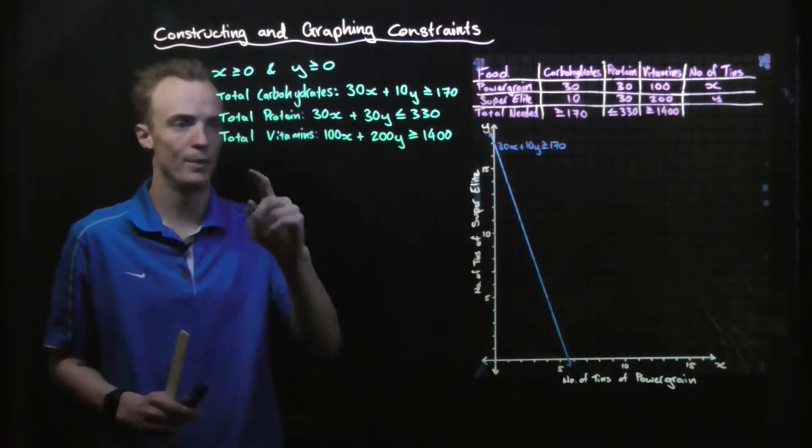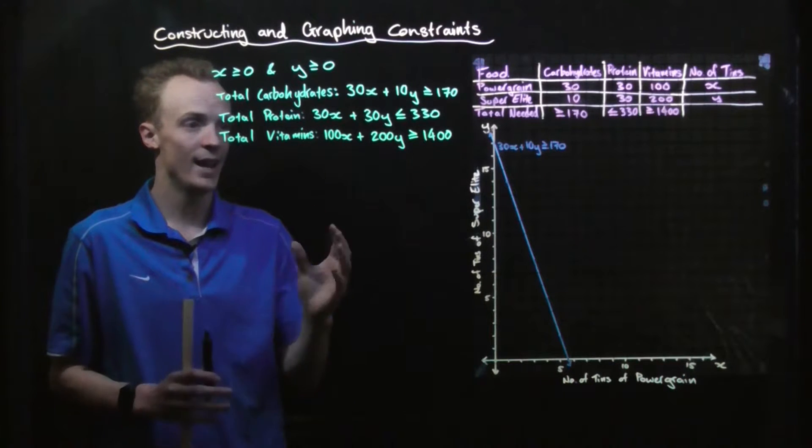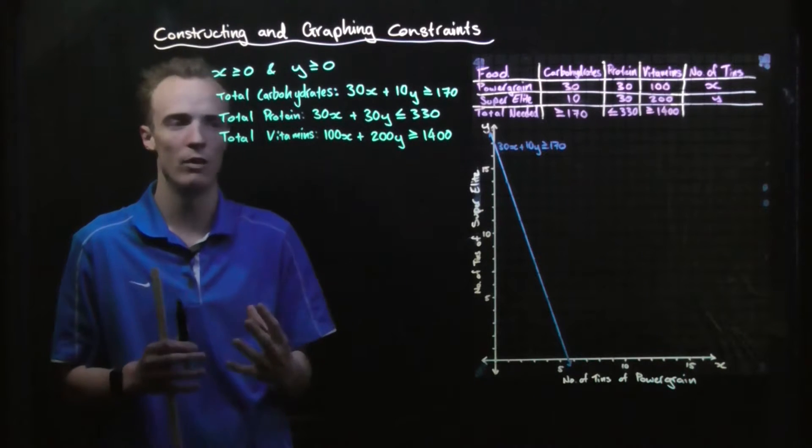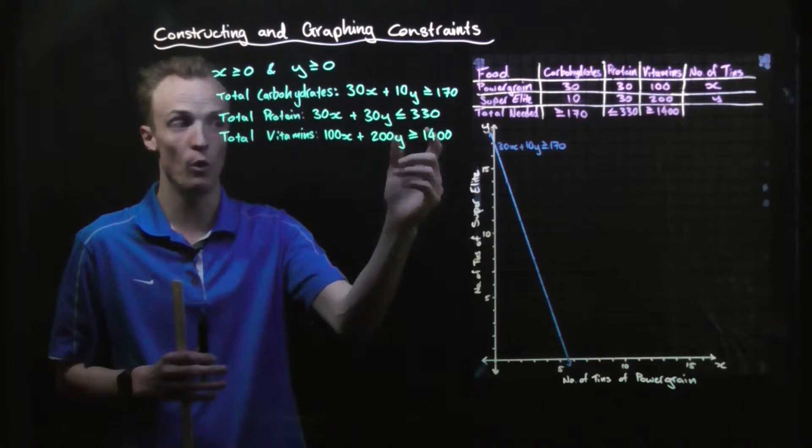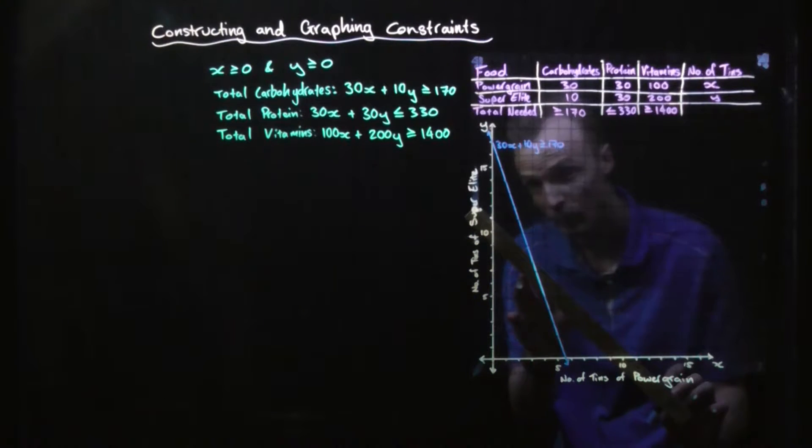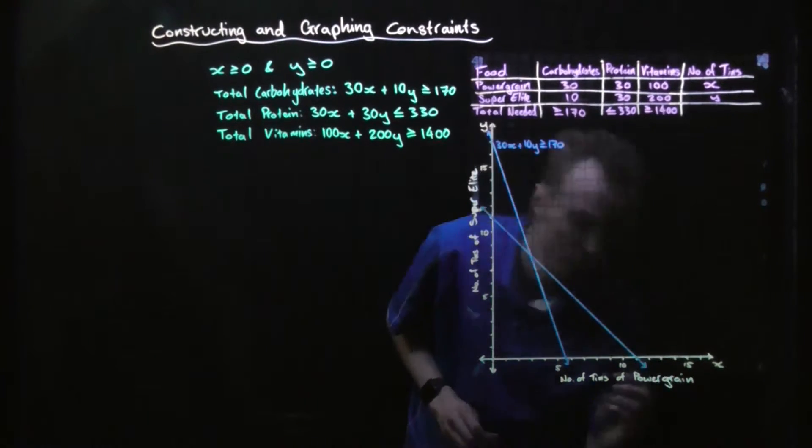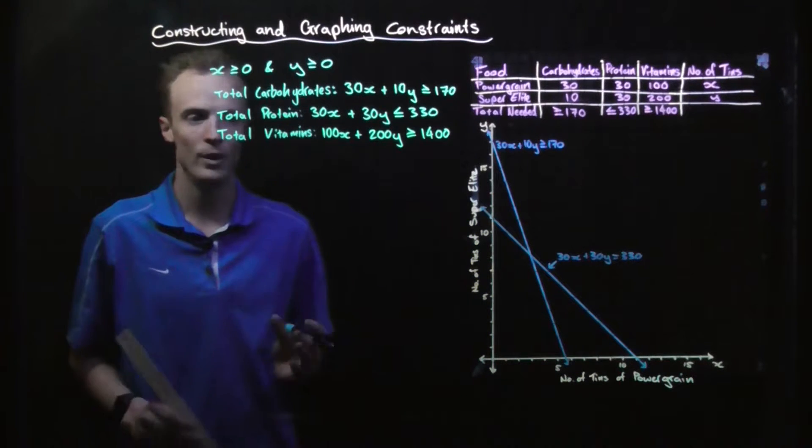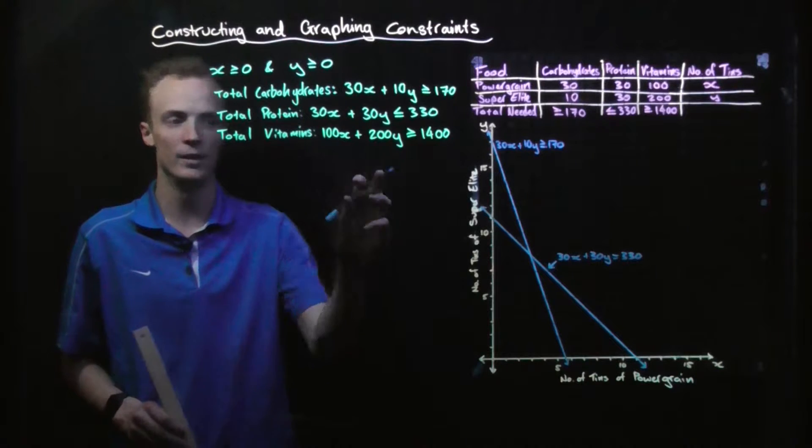Next I have to do the same with the protein. So I take this inequality and graph the equation 30x plus 30y equals 330. And then we do the same thing with the vitamins equation.